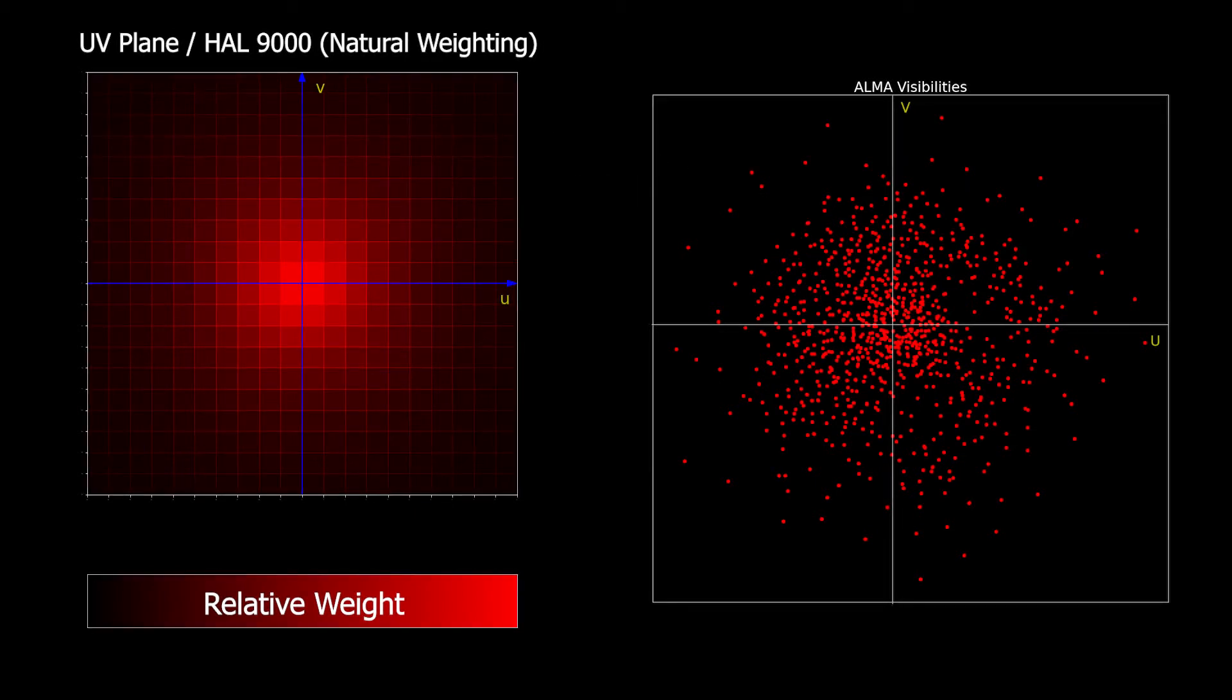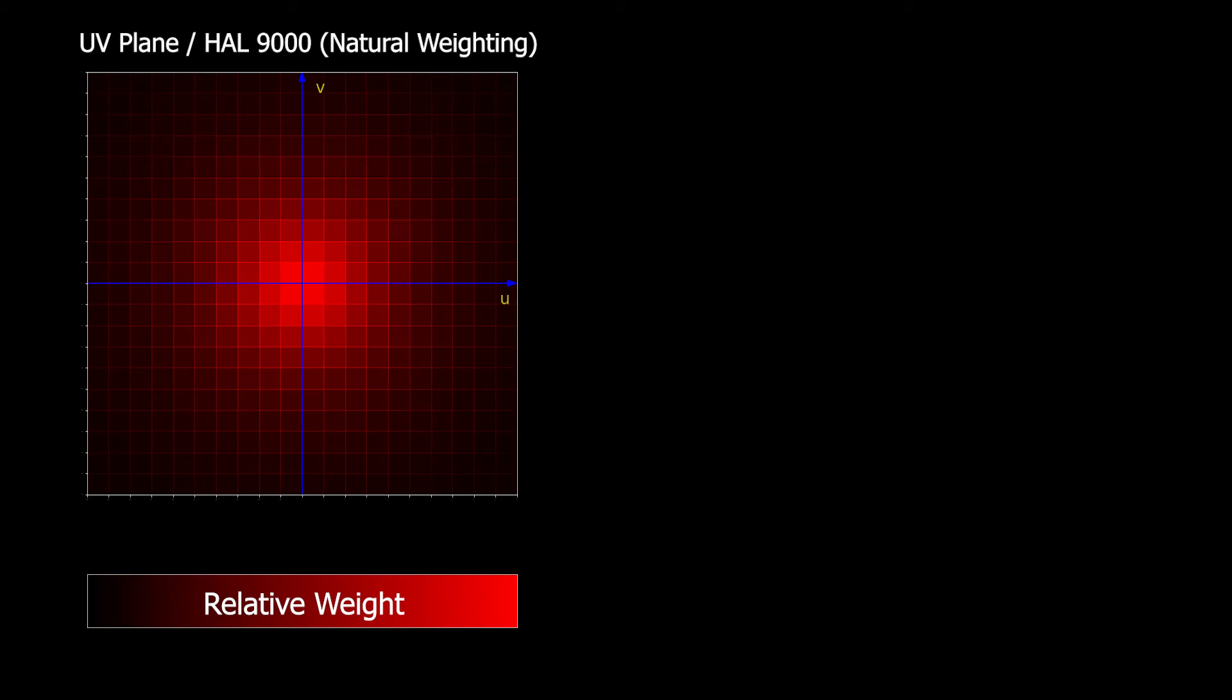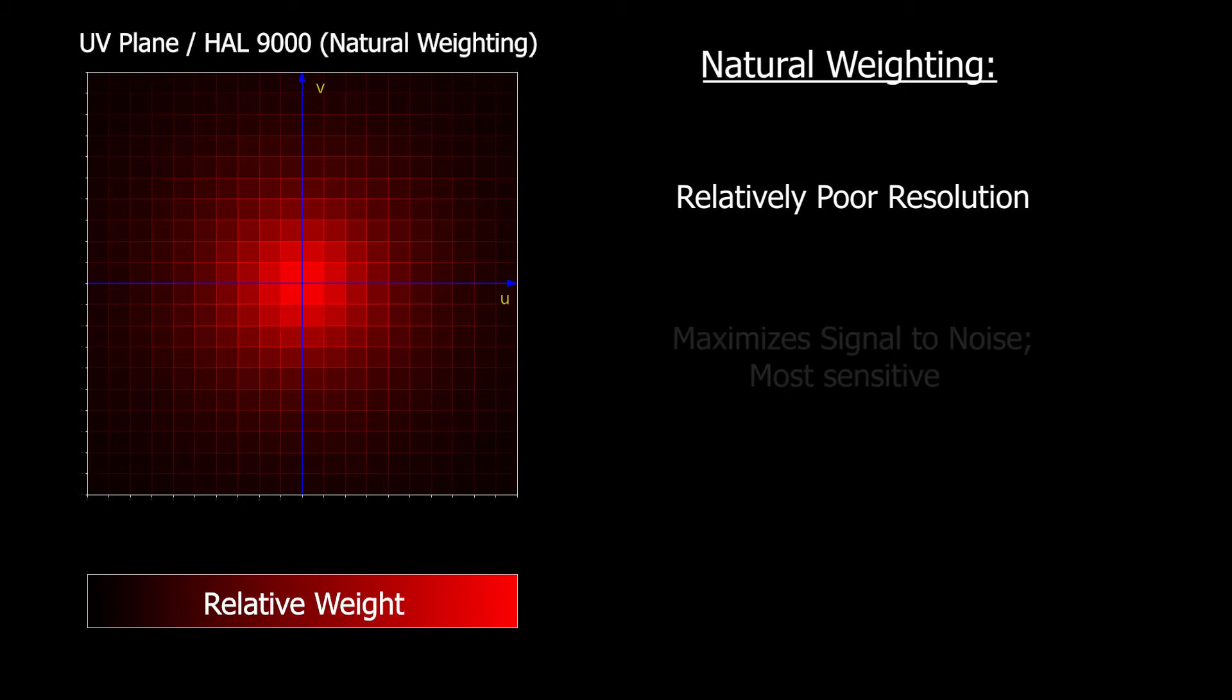The higher imaging weights for the inner UV plane will result in an image in which short baselines are emphasized, causing the beam to be larger. In other words, the resolution will be worse than for uniform weighting. The upside to natural weighting, however, is an increased signal-to-noise in the resulting image.